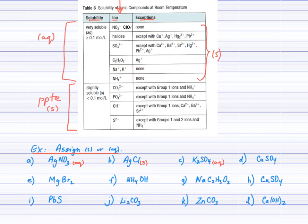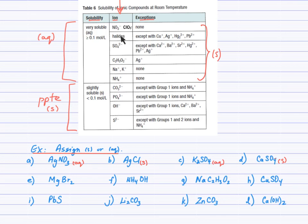Calcium sulfate: sulfate is typically aqueous, but checking exceptions, calcium is listed there. So calcium sulfate is an exception — not aqueous but a solid precipitate. Magnesium bromide: bromide is a halide, so halides are typically aqueous. Magnesium is not an exception, so magnesium bromide follows the rule and will be aqueous.